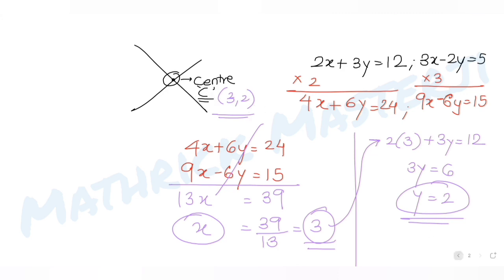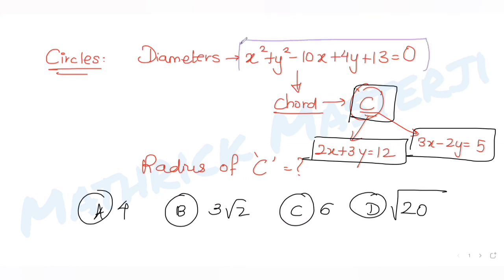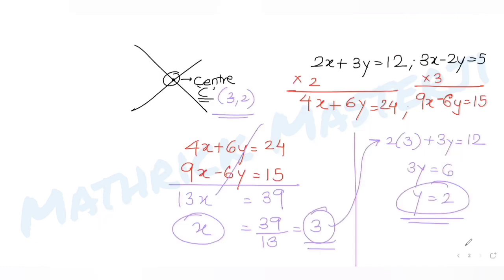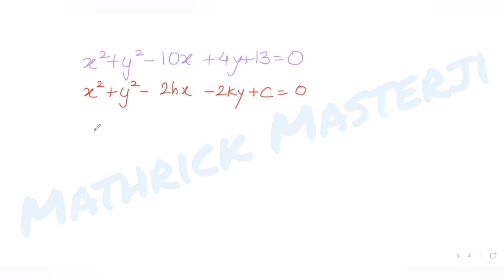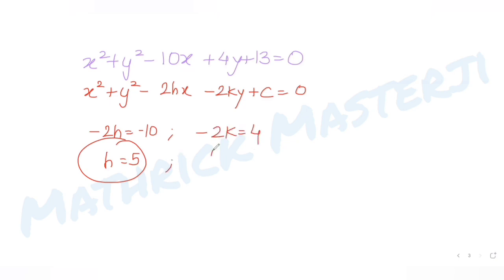Now let's work with the original circle whose equation is x² + y² - 10x + 4y + 13 = 0. Comparing with the general form x² + y² - 2hx - 2ky + c = 0, we get -2h = -10, so h = 5, and -2k = 4, so k = -2. The center of this circle is (5, -2).